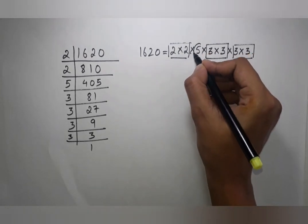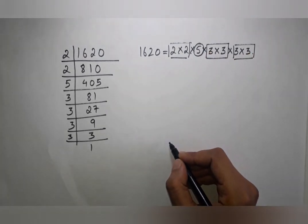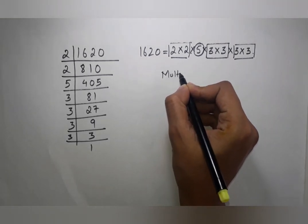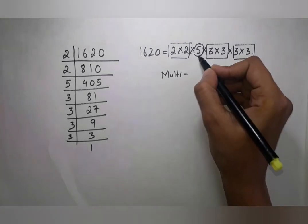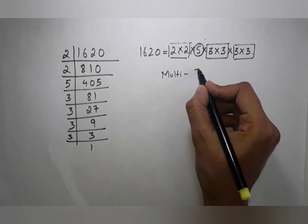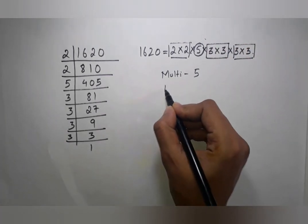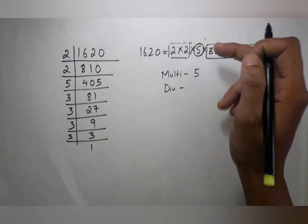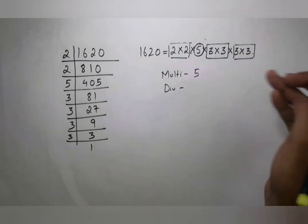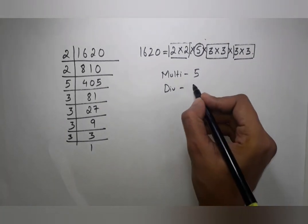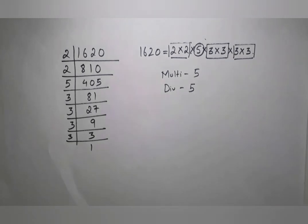Pairing up the factors: 2×2 is one pair, 3×3 is a second pair, 3×3 is a third pair — but 5 is left without a pair. So for multiplication, the smallest number to multiply is 5, to complete a pair. For division, the smallest number to divide by is also 5, to remove the unpaired factor.